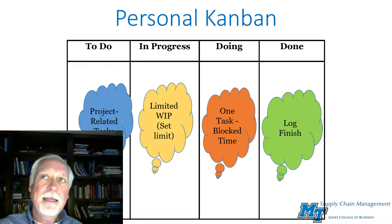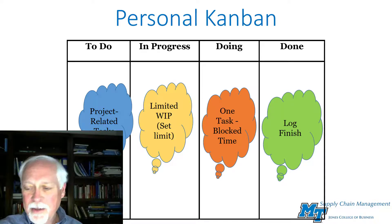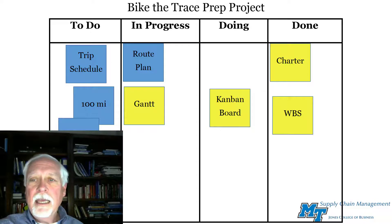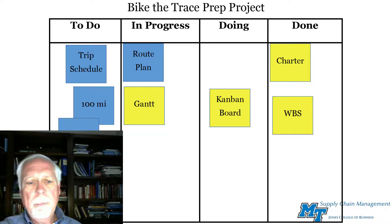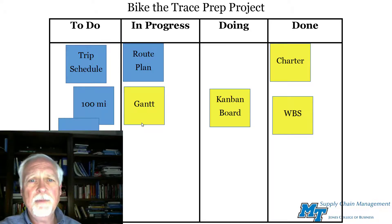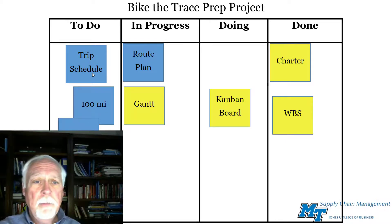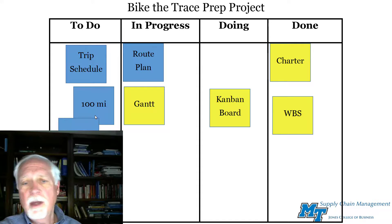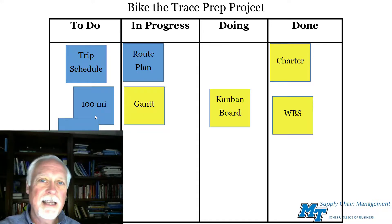I'm having problems communicating with my phone in my office, so I'll show you a graphic instead. For my Bike the Trace prep project, I've used different colors for my tasks. The yellow sticky notes relate more to the plan and project management itself, and the blue sticky notes relate more to the actual prep for the project. Using colors helps segment your tasks appropriately.